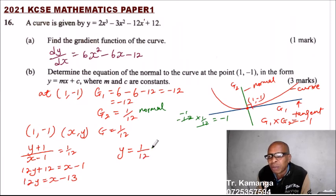Divide both sides by 12. Y is equals to 1 over 12 x minus 13 divided by 12.